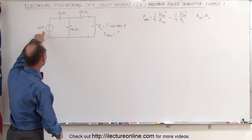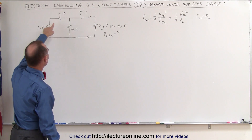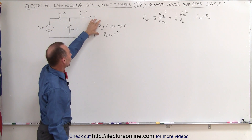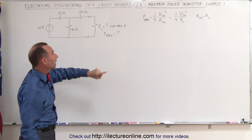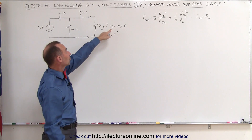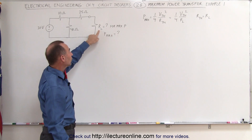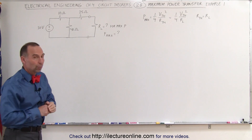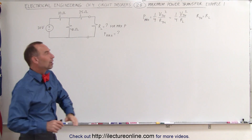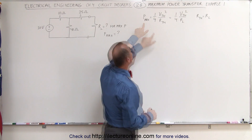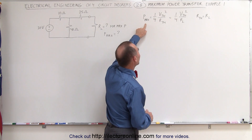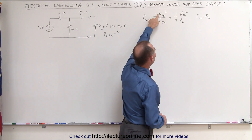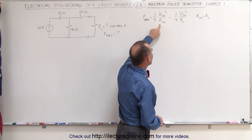Here's the circuit. We have a 30-volt source, a 10-ohm resistor, a 40-ohm resistor, a 25-ohm resistor, and our load resistor. We're going to find the maximum power transferred and what value the load resistor needs to be in order to accomplish that. Remember the equation from the last video: the maximum power transferred is one-quarter the Thevenin voltage squared divided by the Thevenin resistance.